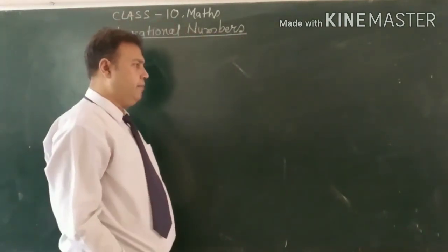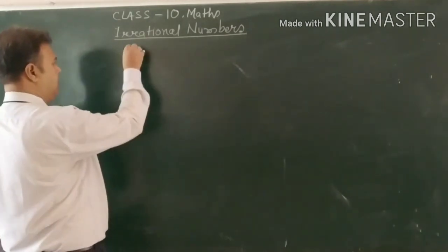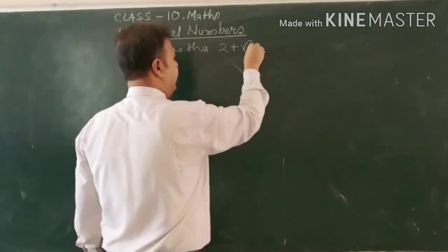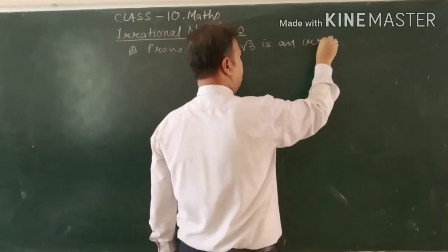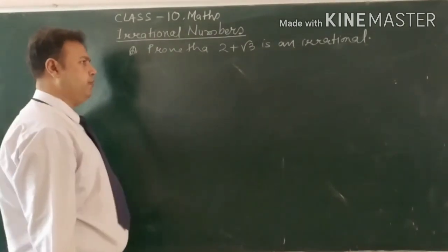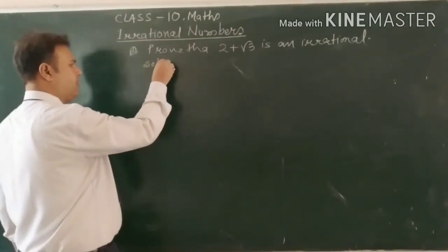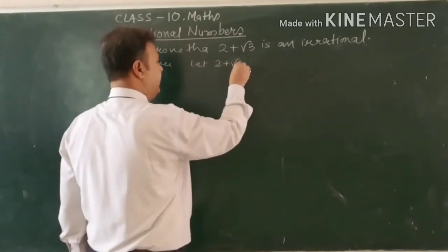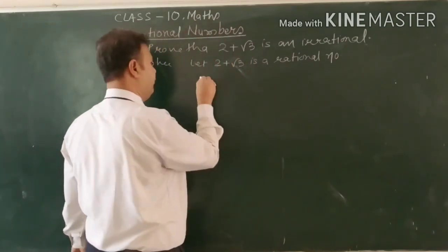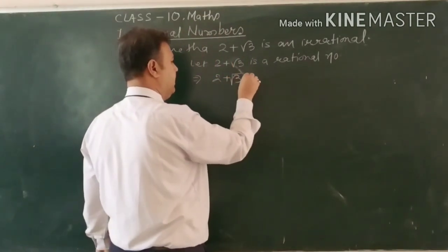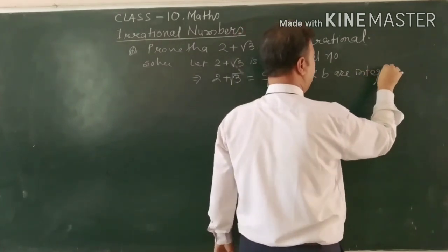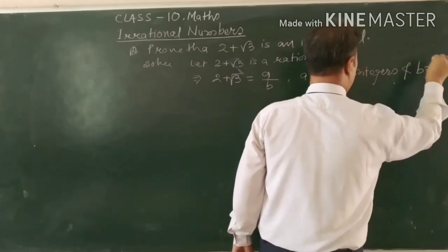Another type of question asked in the same portion: prove that 2 plus root 3 is an irrational number. We have to use a slightly different method from the previous. Let 2 plus root 3 be a rational number. We can write 2 plus root 3 is equal to A upon B, where A and B are integers and B is not equal to 0.